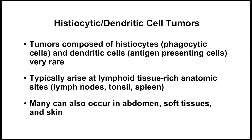Tumors composed of histiocytes, also known as phagocytic cells, and dendritic cells, antigen-presenting cells, are very rare. Histiocytic and dendritic cell tumors typically arise at anatomic sites that are rich in lymphoid tissues, such as lymph nodes, tonsil, and spleen, although many of these tumor types can also occur in the abdominal cavity, in soft tissue sites, and some visceral organs, and in the skin.